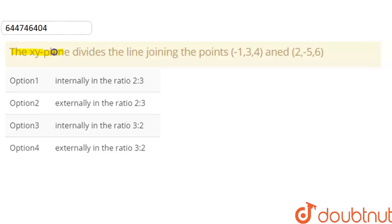Today our question is: the XY plane divides the line joining the points (-1, 3, 4) and (2, -5, 6).